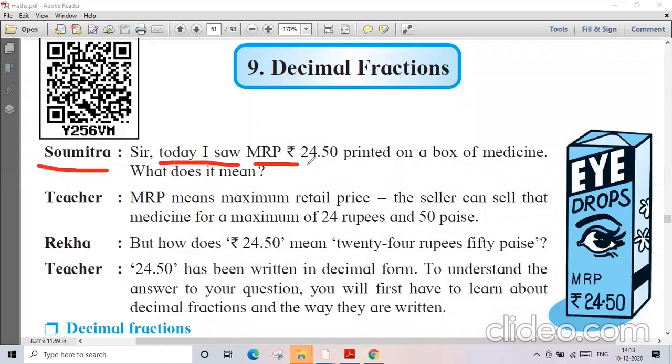Soumitra says sir, today I saw MRP rupees 24.50 printed on a box of medicine - that's eye drops. Teacher says that MRP means maximum retail price. The seller can sell that medicine for a maximum of 24 rupees and 50 paise. But how does 24.50 mean 24 rupees and 50 paise? 24.50 has been written in decimal form. To understand the answer to your question, you first have to learn about decimal fractions and the way we write it.